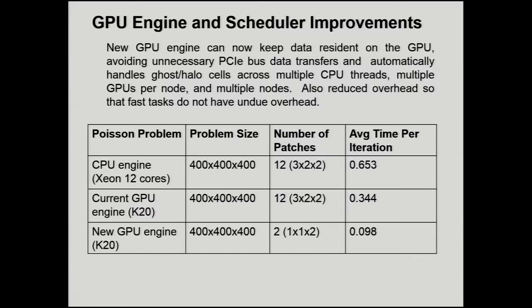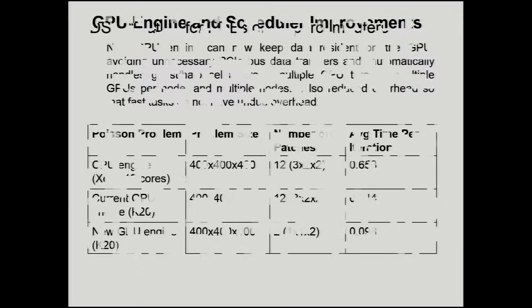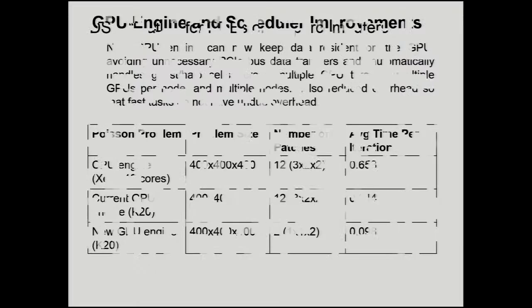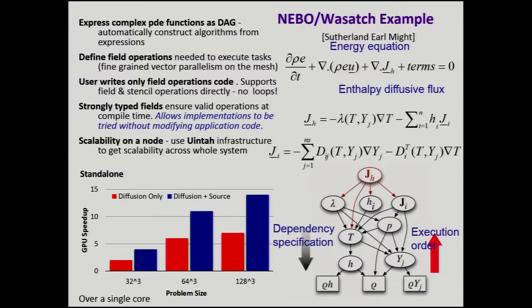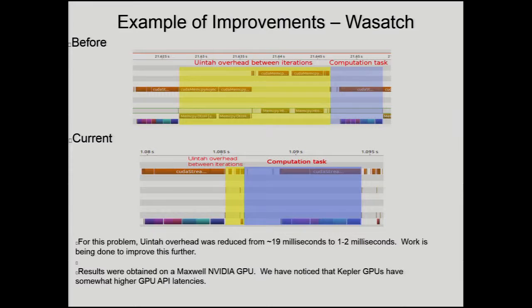I'm going to skip the domain-specific language piece except to say it offers some good automated improvements, perhaps not quite as good as we would like yet. The GPU speedup of about 12 in the largest case is over a single core, so the GPU is only doing as well as about 12 cores, which is not what we'd expect. This is very much in progress. Running on the GPU, the initial overhead over a very low computational task dwarfed the task because of data transfer costs; now that's down to a fraction of the computational task. This is work that Brad Peterson and Harish Dasari have been doing.